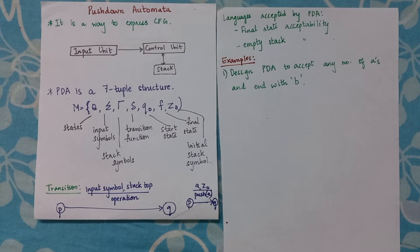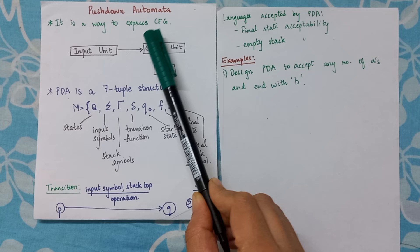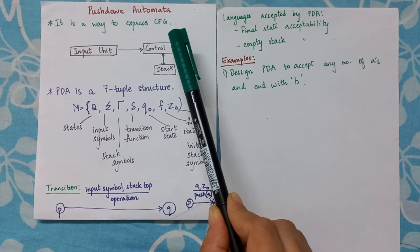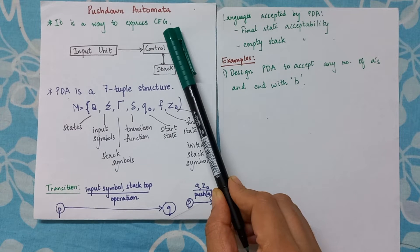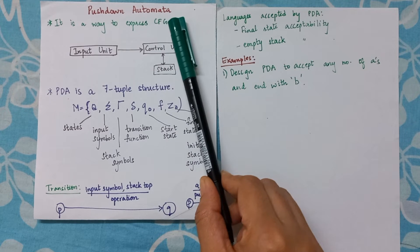Pushdown automata. Now pushdown automata is a way to express a CFG. CFG stands for context-free grammar and the one that has production rules. Please refer to previous video if you need more clarification about CFG. Now any pushdown or any automata that we earlier saw had an input unit and a control unit.